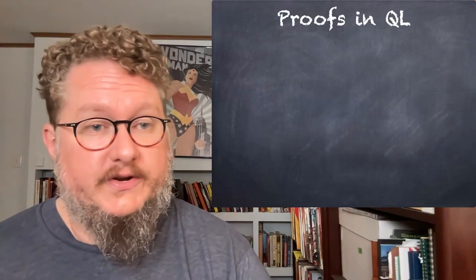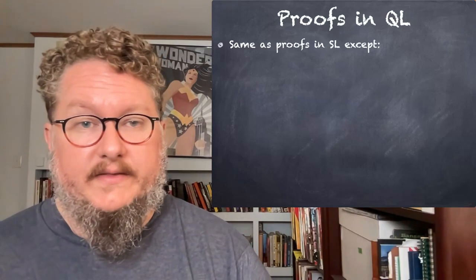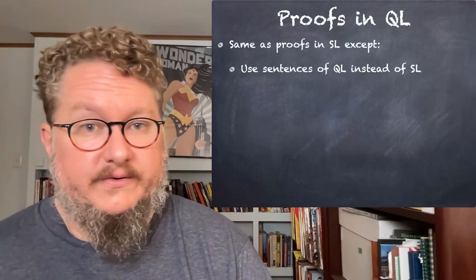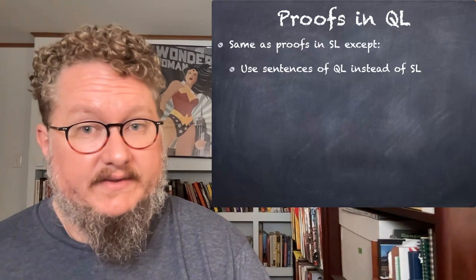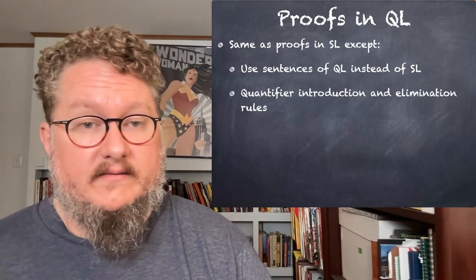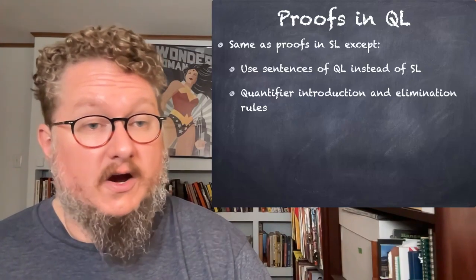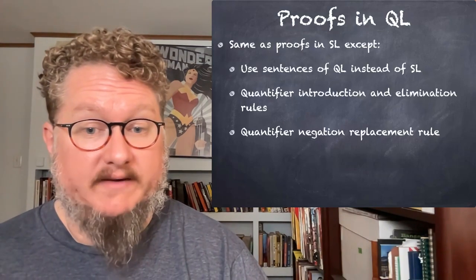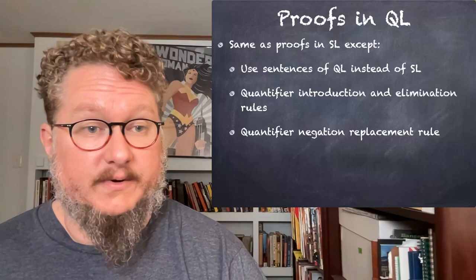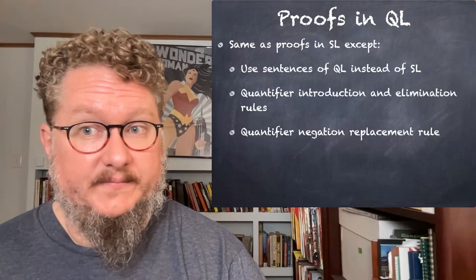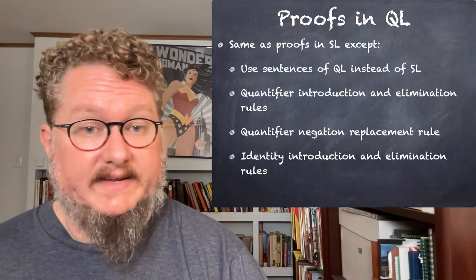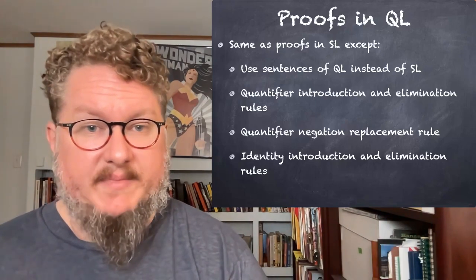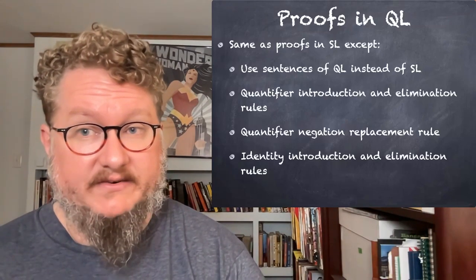A few things you should know from the get-go about proofs in QL. They work the same as proofs in SL, except we use the sentences of QL instead of the sentences of SL. We have introduction and elimination rules for our quantifiers — our universal and existential quantifiers. We have a new replacement rule, which we call the quantifier negation replacement rule, based on the relationship between the existential and the universal quantifier. And we have identity introduction and elimination rules for the identity connective. So let's talk about these additional introduction and elimination rules first.